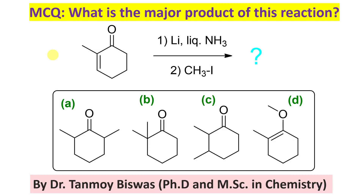Now if you look at the reagent, this reagent is nothing but an alpha-beta unsaturated carbonyl compound, and it reacts with lithium in liquid ammonia. So this first condition is actually Birch reduction.